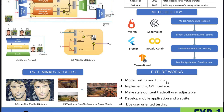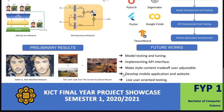For future work: model tuning and testing to make results even better next semester, implementing the API, and making the style-content ratio user-adjustable — for example, 200% style and 80% content, or 30% style and 70% content — so users can find a satisfactory balance. The final part is developing the overall application and conducting live user-oriented testing. Assalamu alaikum wa rahmatullah.